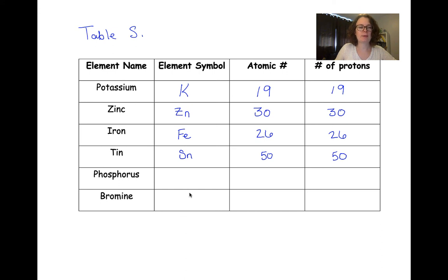Our next example here is phosphorus. It has a chemical symbol of P. If we have phosphorus with the designator P, we can't have P for potassium as well, so we need a different letter there. Phosphorus has an atomic number of 15, which means it has 15 protons.